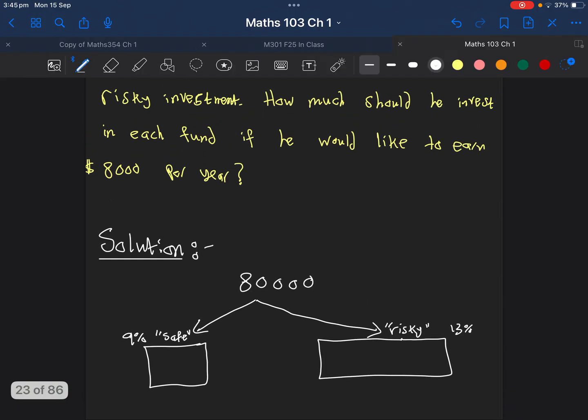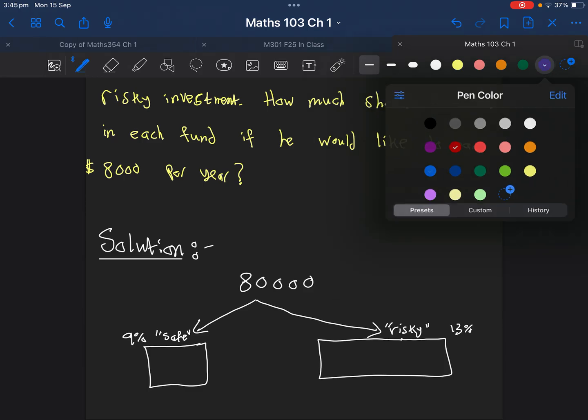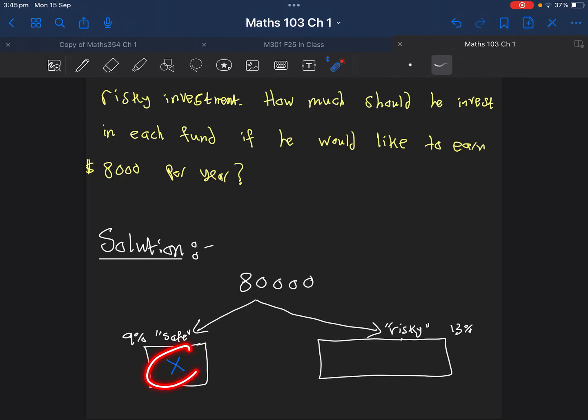What should we write in the first one? We will just write an X. If we put an X here, how much is the remaining? Well, the total is $80,000. Some of them goes here which is X, the rest will go here, so the rest will be just $80,000 minus the X.